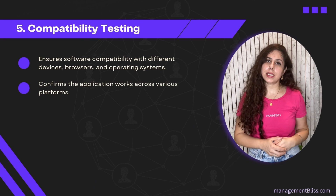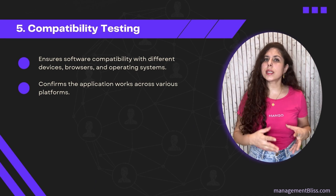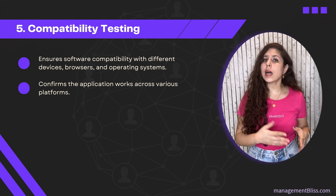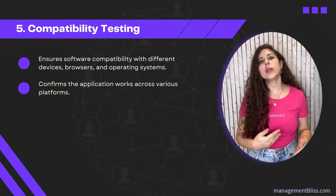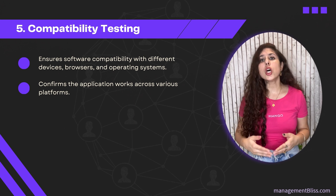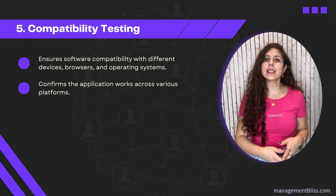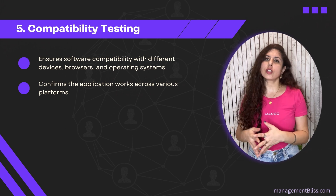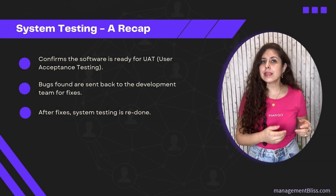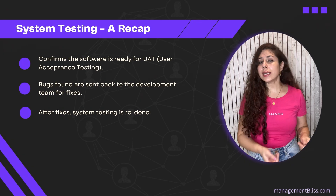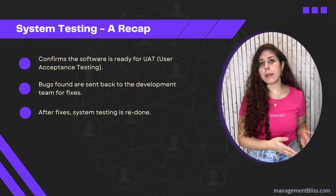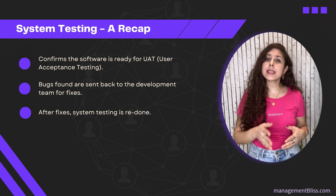Fifth is compatibility testing. In compatibility testing, we test the software for its compatibility with different kinds of devices — which is again part of system testing. We test our application on different browsers, devices, and operating systems to make sure it is compatible with all of them. All these aspects are covered in system testing. System testing essentially ensures that the software is in a robust state and can be deployed to a new environment for testing by real users and business stakeholders.